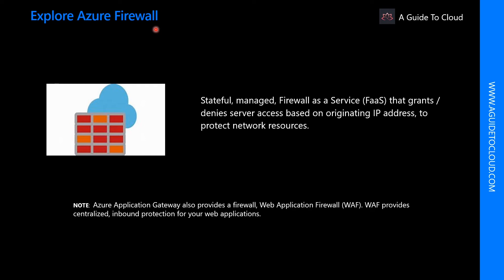Firewall rules also include specific network protocol and port information. Azure Firewall is a managed, cloud-based network security service that protects your Azure virtual network resources. It is a fully stateful firewall as a service with built-in high availability and unrestricted cloud scalability. You can create, enforce, and log application and network connectivity policies across subscriptions. Azure Firewall uses a static public IP address for your virtual network resources, allowing outside firewalls to identify traffic originating from your virtual network.